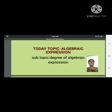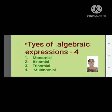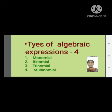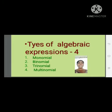Yesterday we were discussing about the types of algebraic expressions. So how many types of algebraic expression are there? There are 4 types of algebraic expression. The first one is monomial, second one is binomial, third one is trinomial, and fourth one is multinomial. These are all definitions already studied in the previous class.